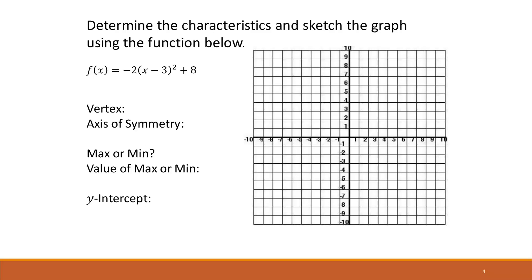For this first example, we know our vertex is (h, k), so h = 3 and k = 8, giving vertex (3, 8). The axis of symmetry is x = 3. Since the leading coefficient is negative, the parabola opens downward, which means we have a maximum point. Our maximum y-value is 8.